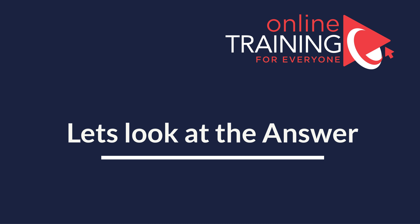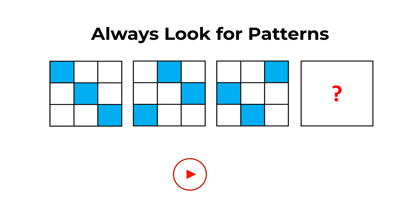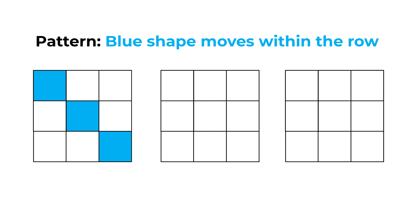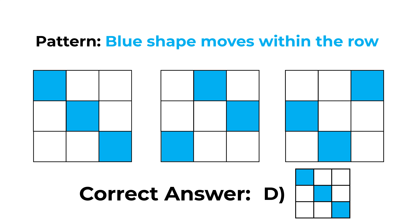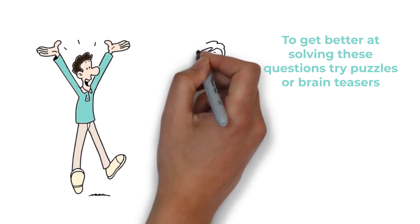As always, my advice to you: look for patterns. Determining the pattern is key to solving this particular problem. The blue shape moves within the row of the larger shape. In each row, the blue shape moves from left to right, one step at a time. And once the blue shape reaches the end of the row on the right, it reappears on the left. So the correct answer here is Choice D. Hopefully you've nailed this question and now know how to answer similar problems on the test.